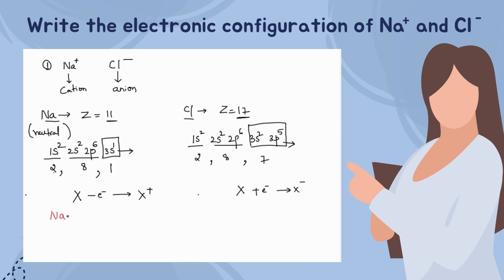We remove one electron from sodium's 3s sub-shell to get Na⁺. So the configuration becomes 1s² 2s² 2p⁶. This is the neon configuration, which is an inert gas configuration and is therefore stable.